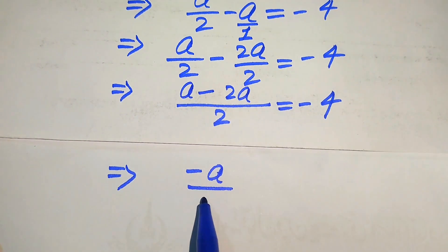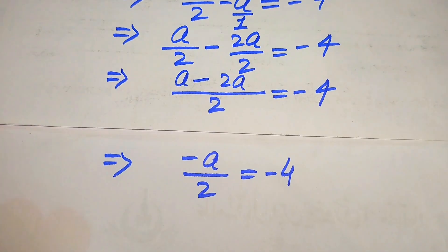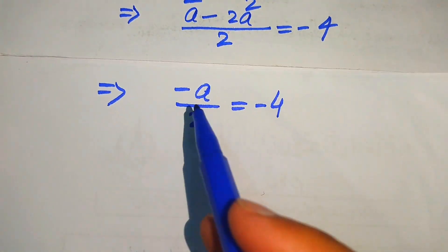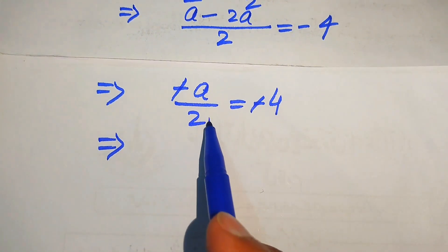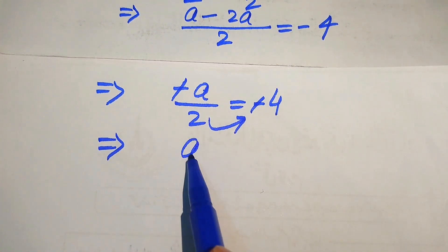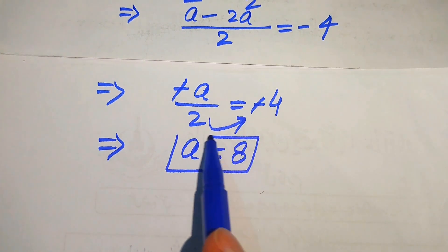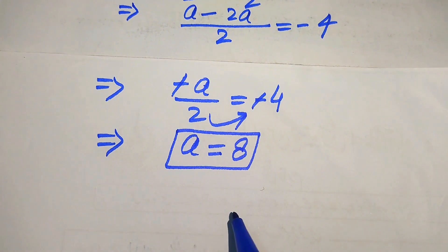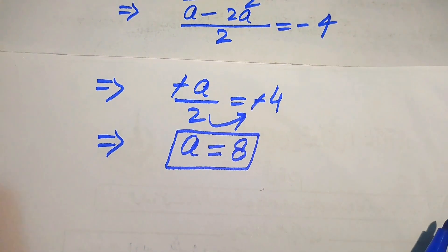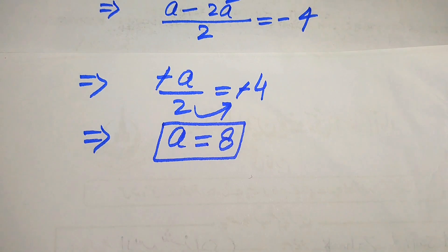The minus signs cancel out, and moving 2 to the right-hand side gives a is equals to 8. This is the final root of the given equation — the same result as in the first method. This is the final answer. Thank you so much for watching this video. Please subscribe to my channel for more exciting videos.